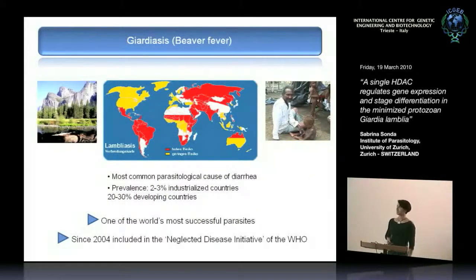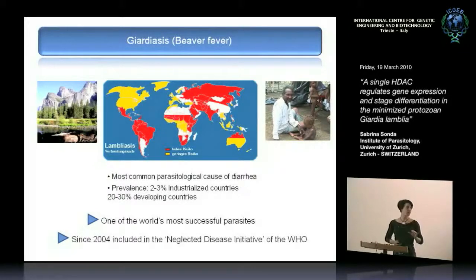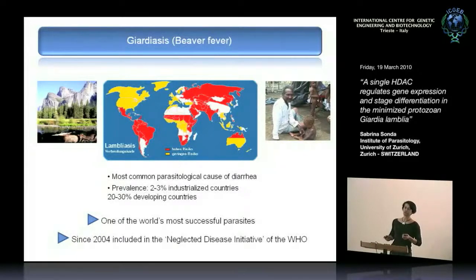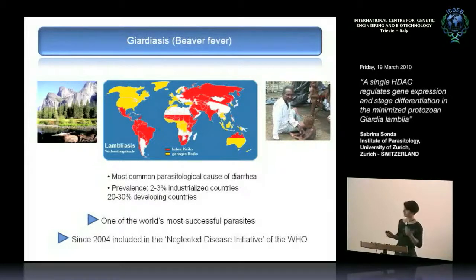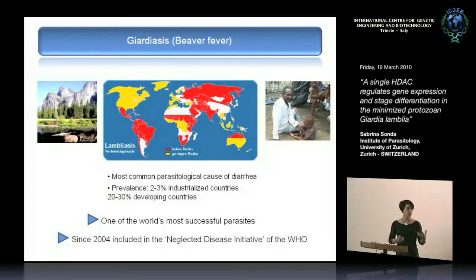A few words about the disease. As you can see from its distribution, this is not an exotic parasite. It causes traveler's diarrhea, but that's not the only place to get infected. Very frequent outbreaks happen in Canada and the United States, including in beautiful natural park locations where streams are basically infested with Giardia. The major problem arises in developing countries where treatment is not immediately available, particularly for children, who are more prone to infection. Prevalence reaches 20 to 30% in those areas.